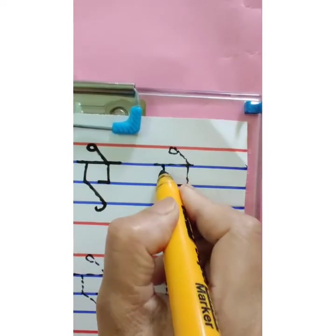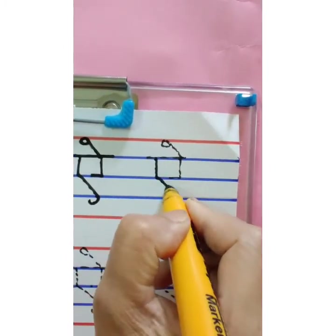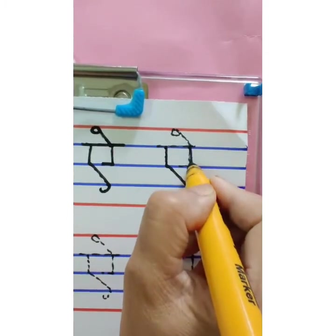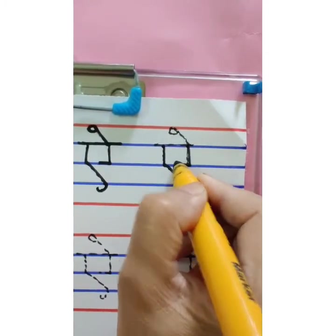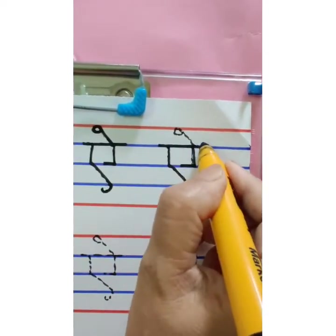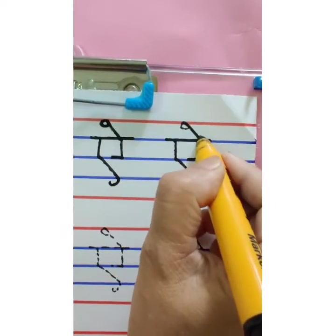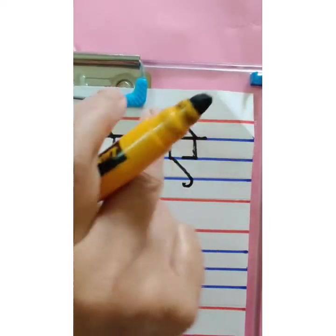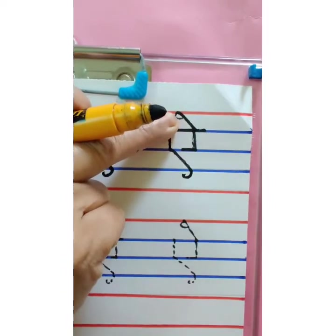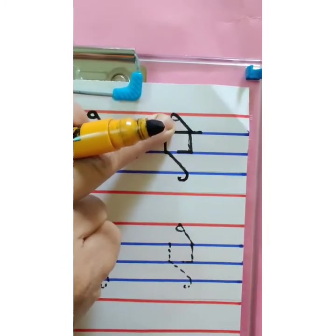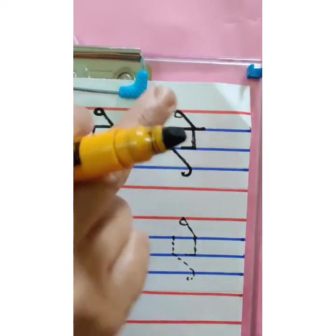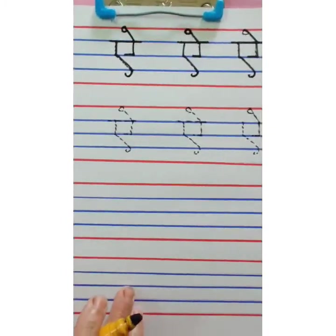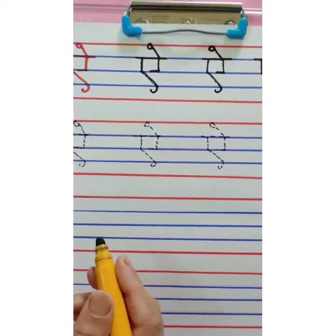One more time: standing line, slanting line, small curve. One more standing line, inside sleeping line, overhead sleeping line, and one matra. If you are not able to make this curve, then just make a slanting line — that will also do. This is 'ay'. Ay say ambulance. This way you are going to trace the dots and then you are going to write independently.